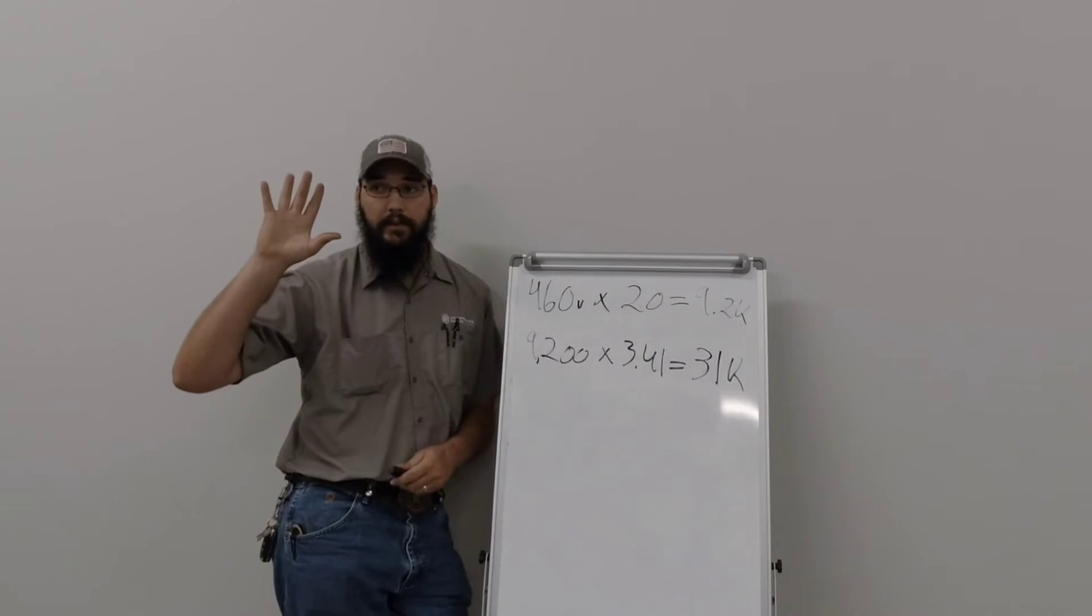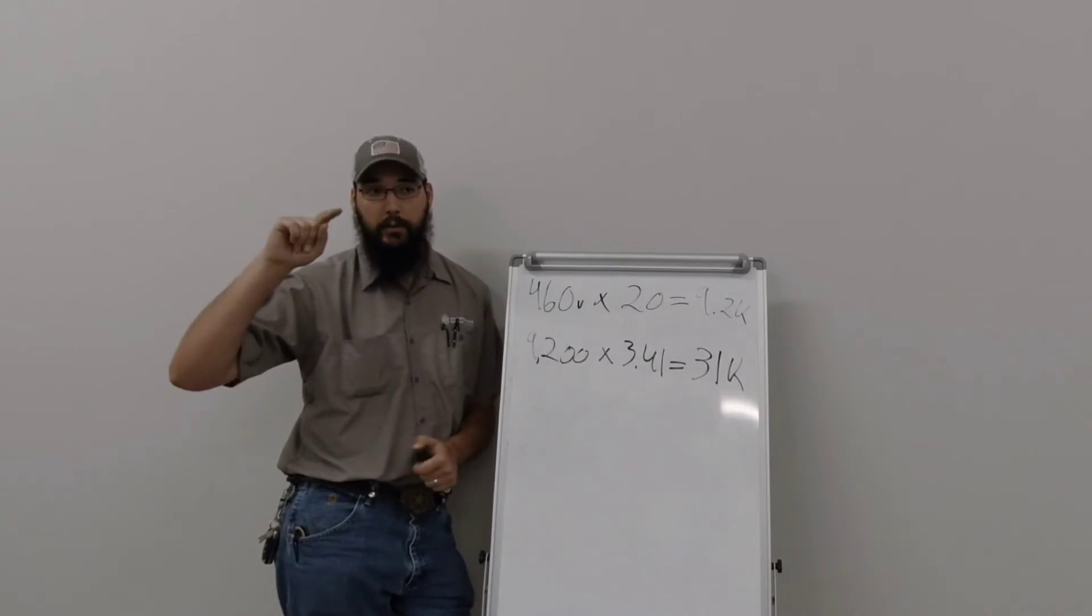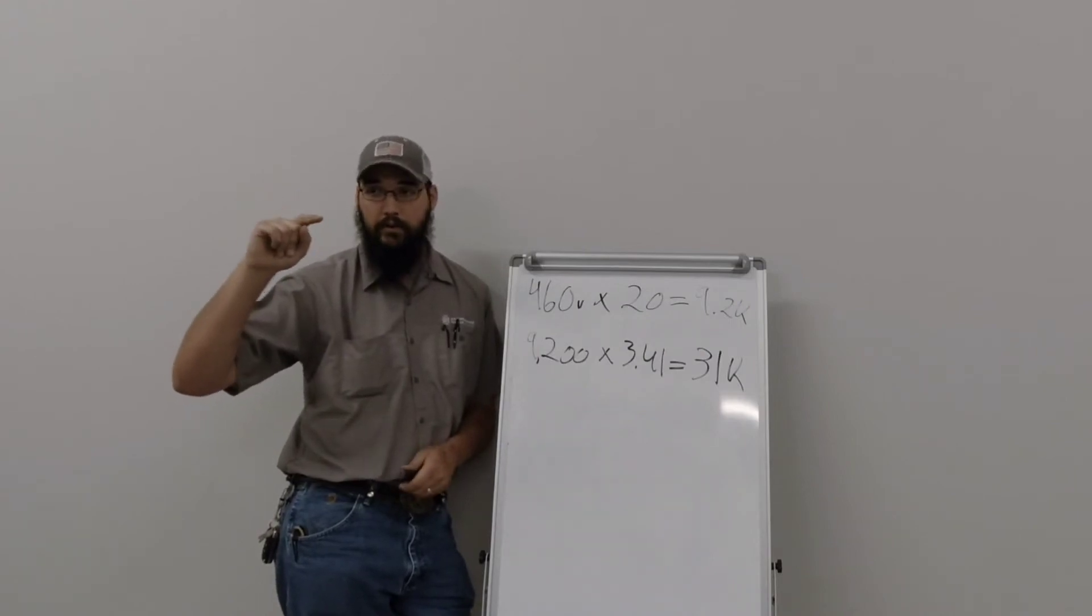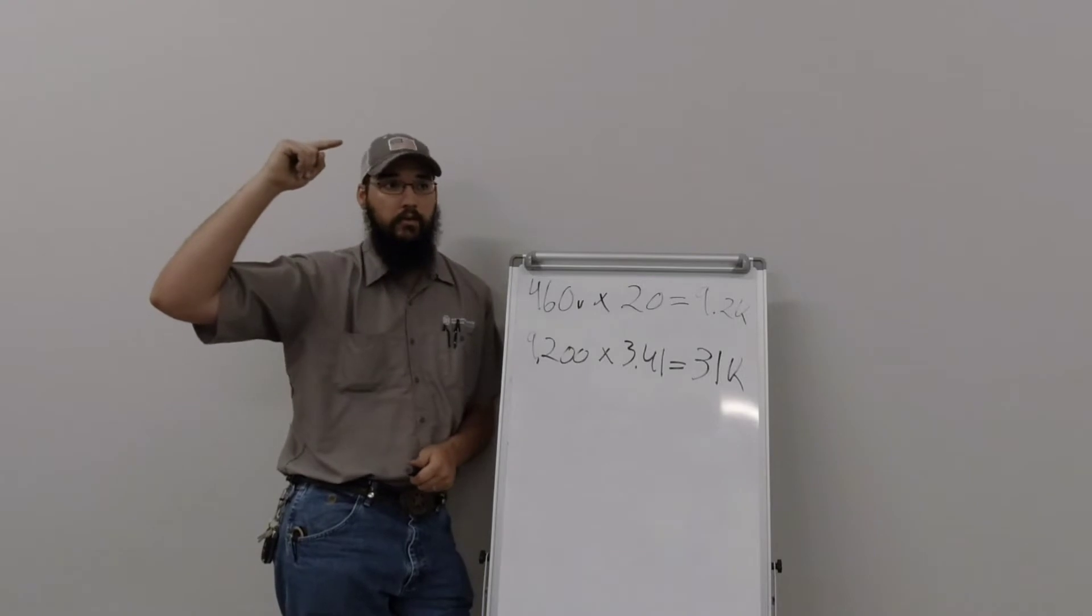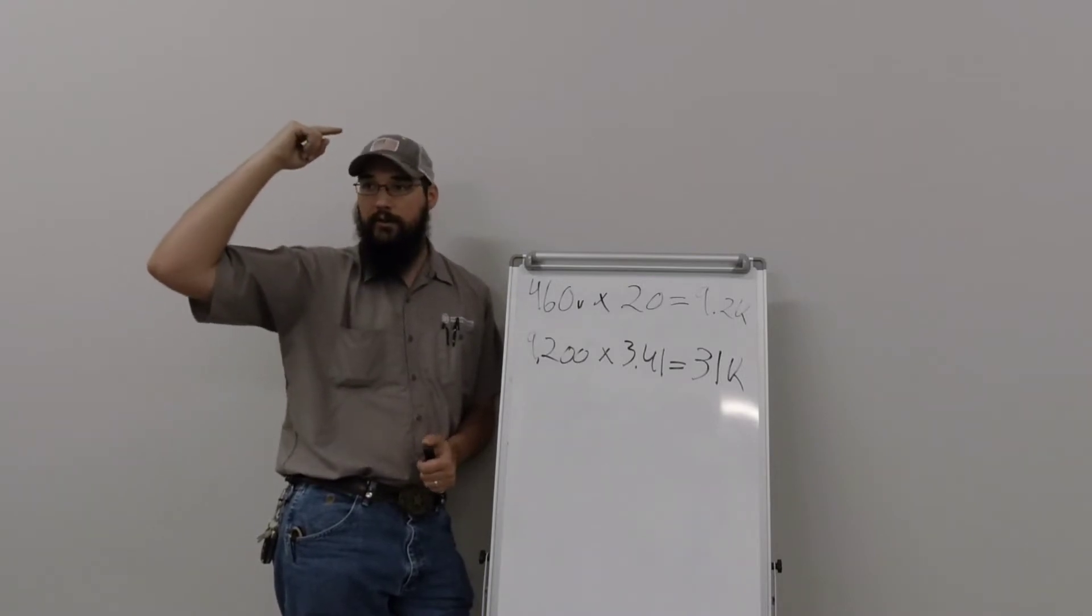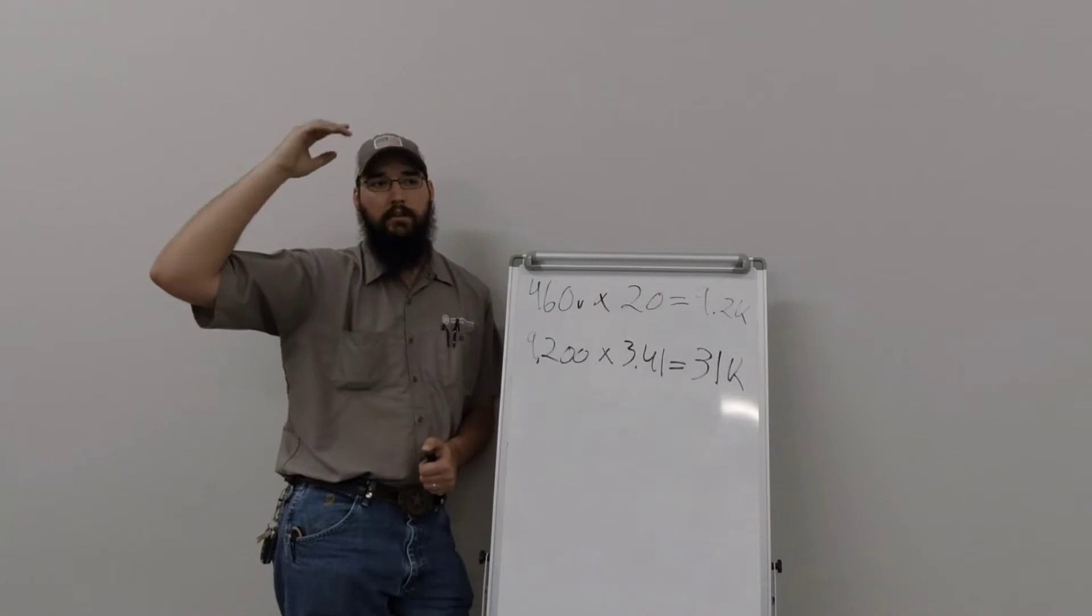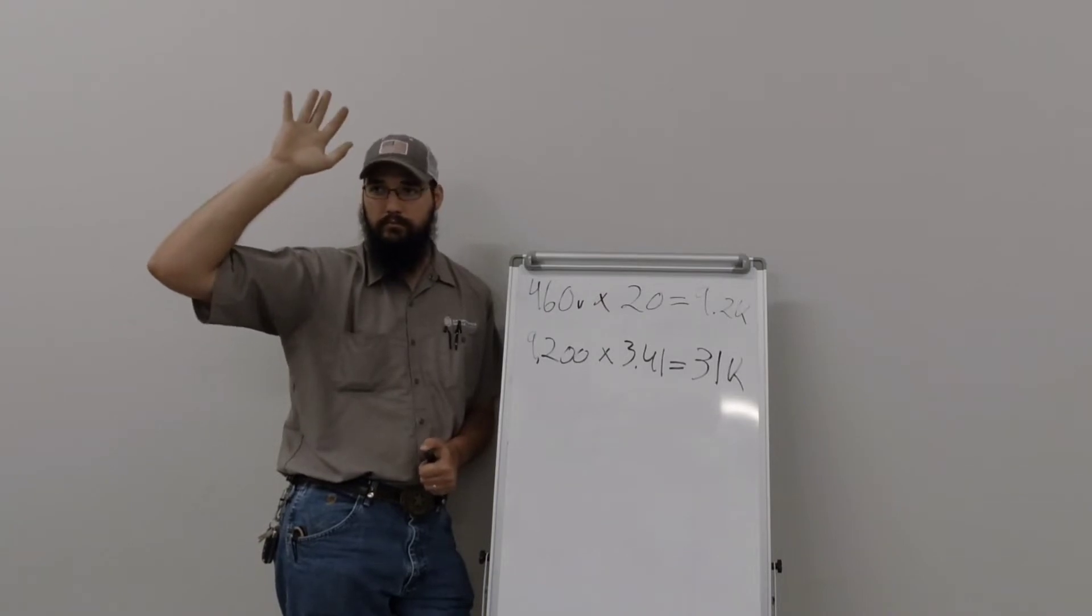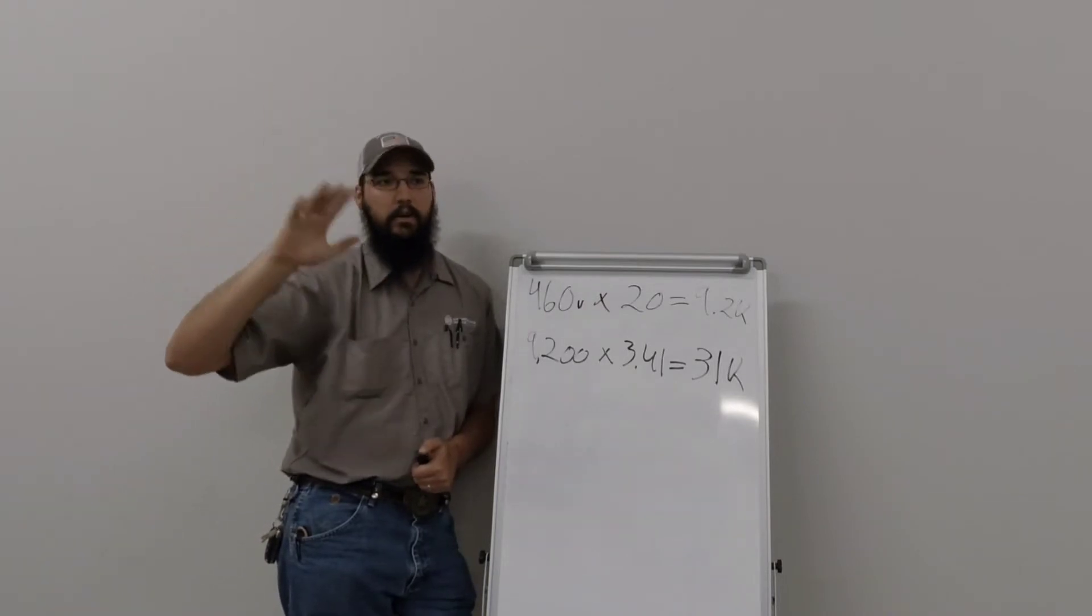Now granted, the discharge line between the compressor discharge to the start of the condenser coil, you're going to reject some heat through there just because it's such a high differential. But you're talking an extremely minute amount, I mean, it's really not that much.